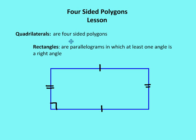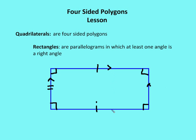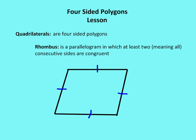A rectangle is a quadrilateral and also a parallelogram. Rectangles are parallelograms in which at least one angle is a right angle. It just so happens that if one angle is a right angle in a parallelogram, then all angles are going to be right angles. So in a rectangle, opposite sides are parallel and congruent, and all the angles are right angles.